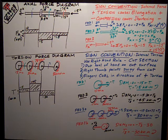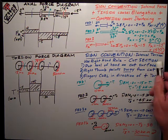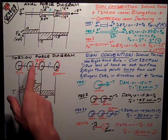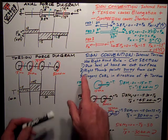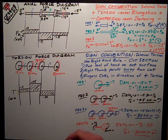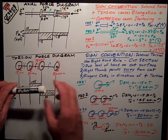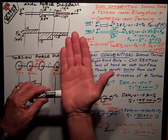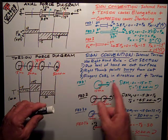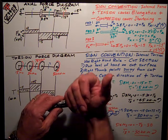The sign convention is a little harder to understand for torsion, but we can do it with the right-hand rule. We're talking about internal torsion — the torsion internally that resists the external torsion. I cut sections 1, 2, and 3, then put the heel of my hand on the cut surface with my right thumb pointing away from the cut. My fingers curl in the direction of positive torsion, which is over the top.